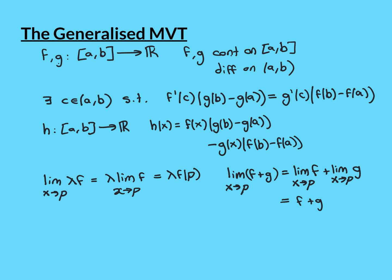Now the second part of the criteria for being able to apply the mean value theorem: we need the function h to be differentiable on the open interval (a, b). Well, now we can just apply the linearity of differentiation.